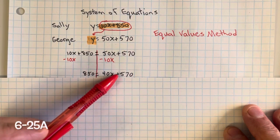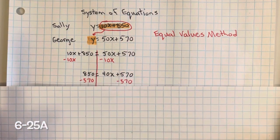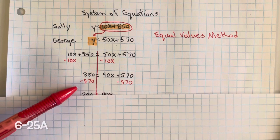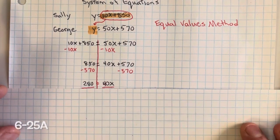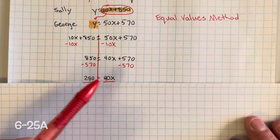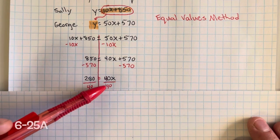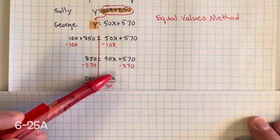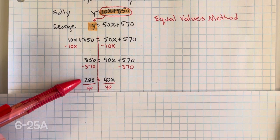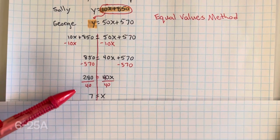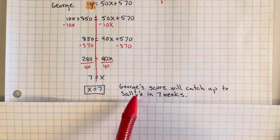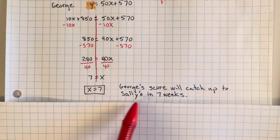Now we need to move this term over to the left. The inverse property of addition is subtraction, which creates a zero pair. What you do to one side, you do to the other. 850 minus 570 equals 280. This is multiplication, so the inverse property of multiplication is division. Dividing by 40 because this creates the giant 1. 40 divided by 40 is 1, and 1 multiplied by x is x. 280 divided by 40 is 7. So x equals 7.